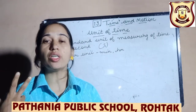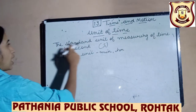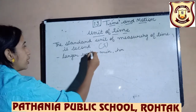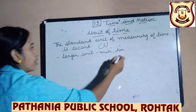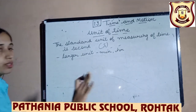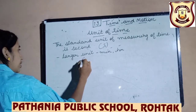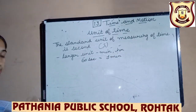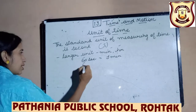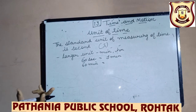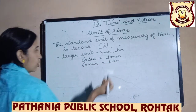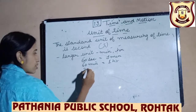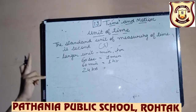Now we are going to discuss the unit of time. The standard unit of measuring time is the second, denoted by 's'. The larger unit is the hour and then the minute; the second is the smallest. The conversions are: 60 seconds equals 1 minute, 60 minutes equals 1 hour, and 24 hours equals 1 day.